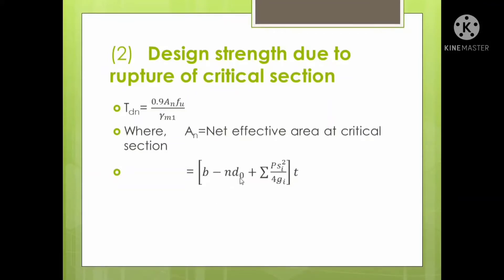In the net area equation, N is the number of bolts, D₀ is the diameter of bolts, G is the gauge distance, T is the thickness, and S_i is the distance between the two bolts.